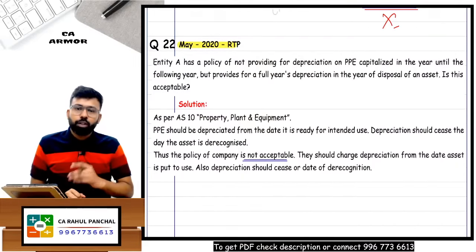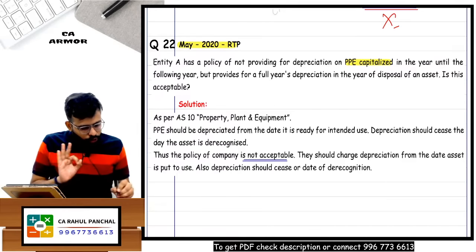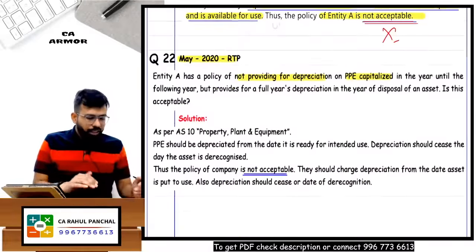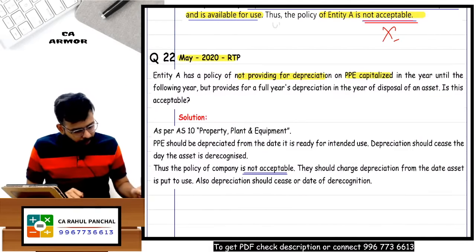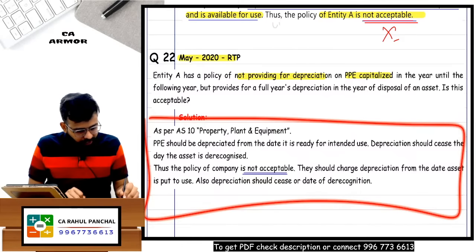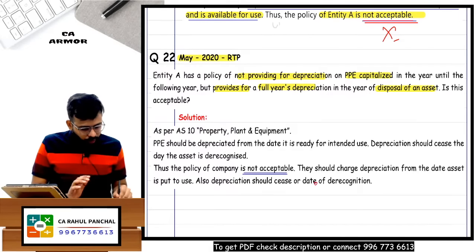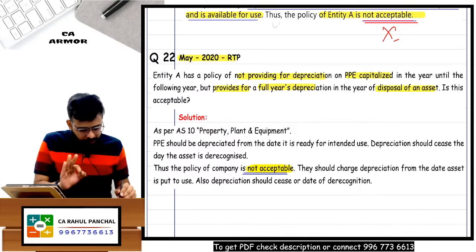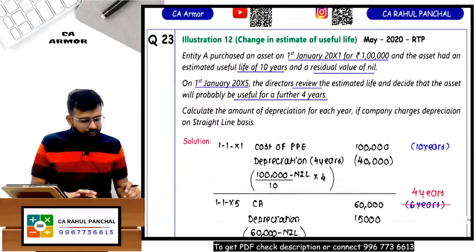Question 22 has the same issue as above - not providing depreciation when PPE is capitalized, and providing full-year depreciation when disposed. This was also in RTP 2020. These small questions can come in exams. The answer is the same: this is not acceptable; depreciation must be charged on a systematic basis. You have to charge depreciation on a systematic basis.